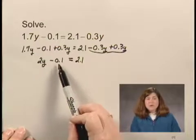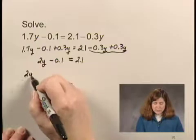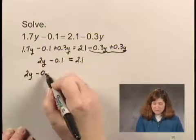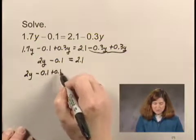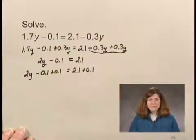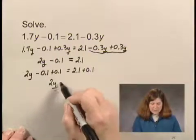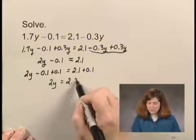By adding 0.1 on both sides of the equation. So I have 2y minus 0.1 plus 0.1 equals 2.1 plus 0.1. I get then 2y equals 2.2.